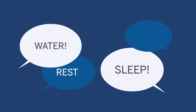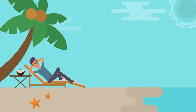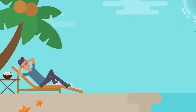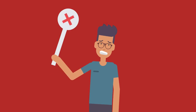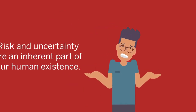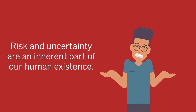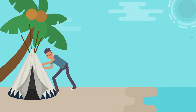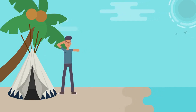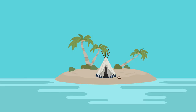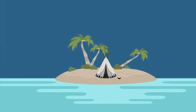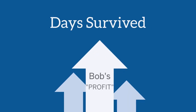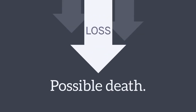Bob may decide that he can survive three days without water, and so focuses instead on creating a shelter for the night. Another person in this situation may choose differently, but it is Bob's individual judgment that guides the choices he makes. Bob's decision may not be the right one — risk and uncertainty are an inherent part of our human existence. Perhaps Bob ends up spending so much time building a shelter that he does not give himself enough time to find water when he desperately needs it. Bob's decision affects the number of days he can survive on the island. In this case, his profit is measured in terms of the number of days he is able to live having made this choice. A loss could be his death.